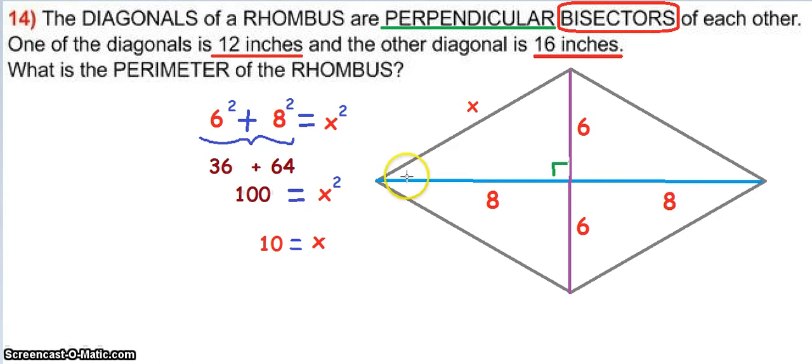Which means that the blue segment, that diagonal and the purple segment, cut each other into two equal parts and also this is a right angle.